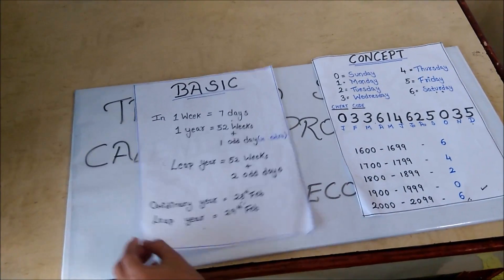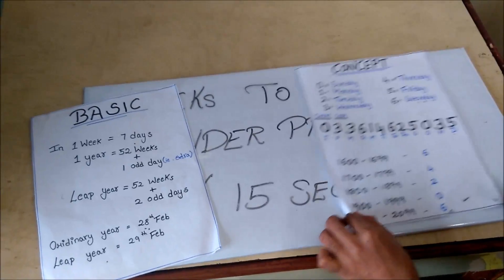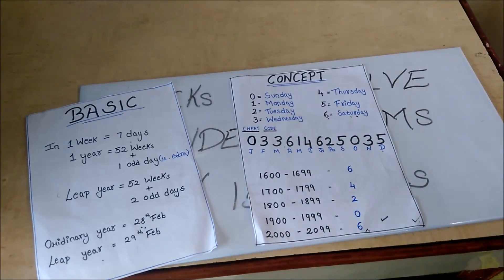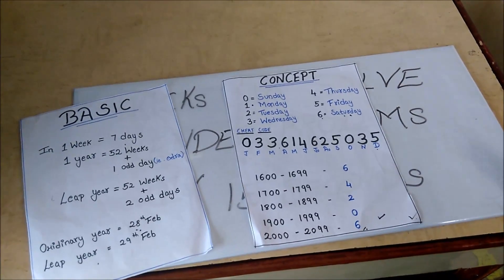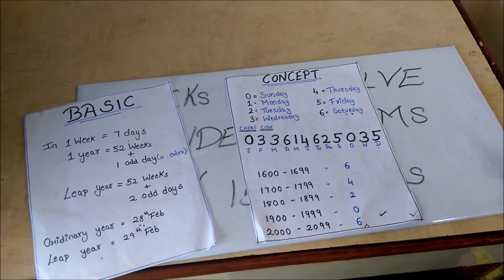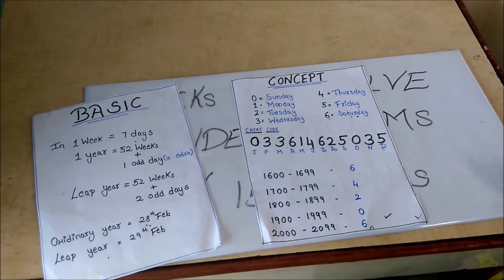As the basics are clear, let's see the concept. Concept is divided into 3 parts: weekdays, months, and year. It means some cheat codes and formulas you have to remember to solve problems in less than 15 seconds.